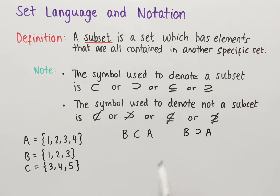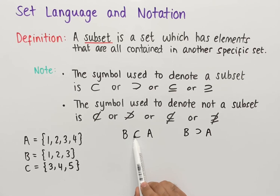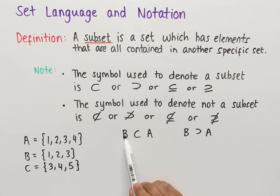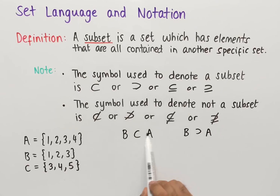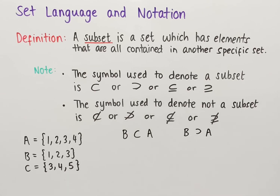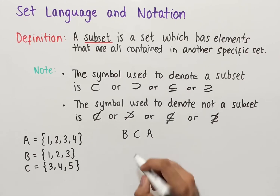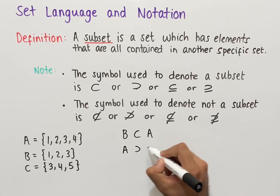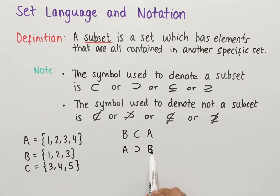We can't write B is a subset of A using the reversed symbol, because that is read as 'A is a subset of B.' The tail end of the symbol indicates which set is a subset of which. We could however write the reverse orientation, which is read as 'B is a subset of A,' so the direction of the symbol matters.